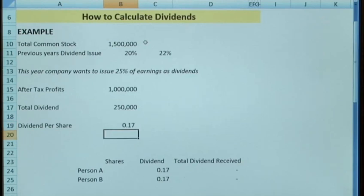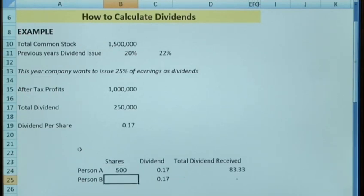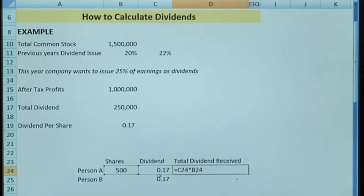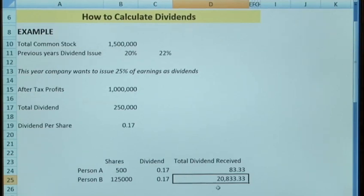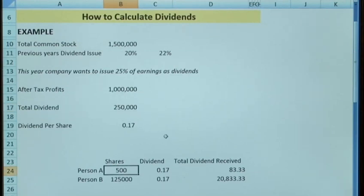So as a shareholder I want to calculate what I can expect from the company based on the dividends. In this example we've got Person A and Person B, both of whom have a different number of shares. Person A is just a small shareholder and only has 500 shares, so we'd expect to receive a dividend of £83.33 in the year, which is simply your shares — 500 multiplied by the dividend per share. Person B is a more significant shareholder in the company and has 125,000 shares, so the dividend received by this person would be £20,833.33. So that's an example of how you calculate the dividend from the company's perspective — what we're going to issue — and then from a personal perspective depending on the amount of shares that we have.